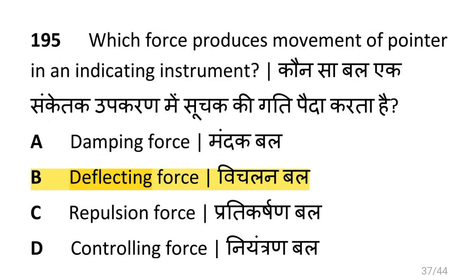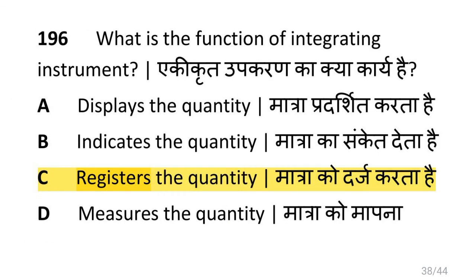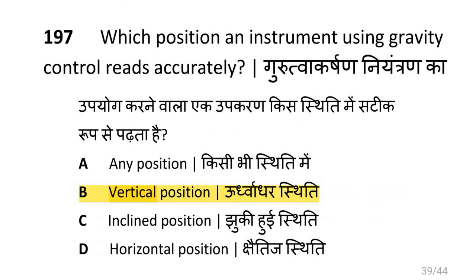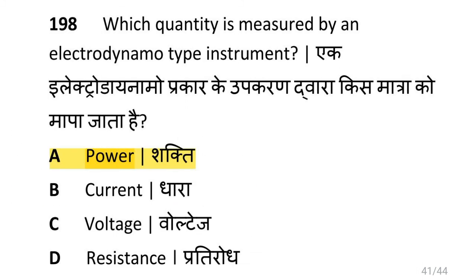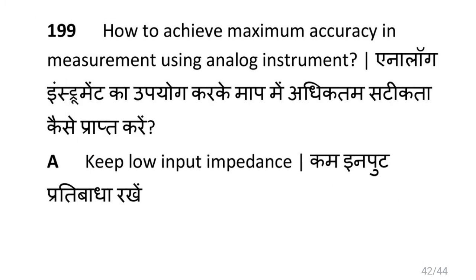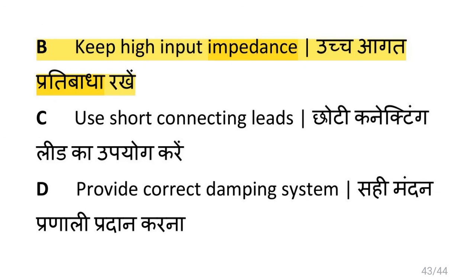Which force produces movement of the pointer in an indicating instrument? That is deflecting force. What is the function of an integrating instrument? That is to register the quantity. Which position does an instrument using gravity control read accurately? Vertical position. Which quantity is measured by an electrodynamo type instrument? That is power. How to achieve maximum accuracy in measurement using an analog instrument? That is to keep high input impedance.